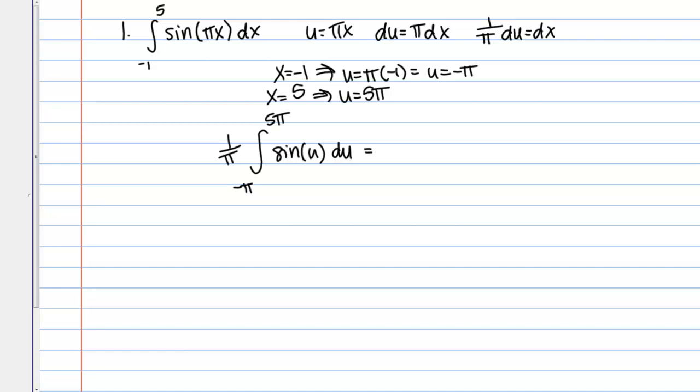I know that the antiderivative of sine is negative cosine. This becomes negative 1 over pi cosine of u from negative pi to 5 pi.